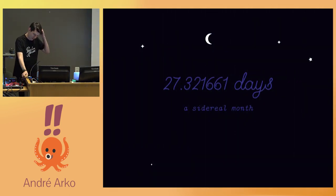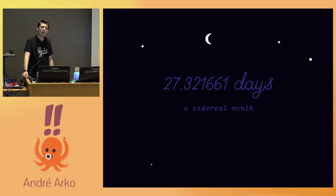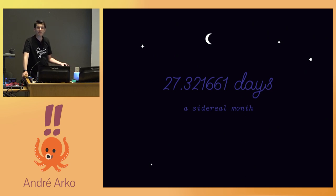Then inspiration struck as I read the Wikipedia page about moon phases yet again. Wikipedia said a sidereal month is exactly 27.321661 days long. And I said, oh, maybe I can just look up exactly when the new moon was and then repeatedly add 27.321661 days and know when the phases of the moon are. That sounds totally reasonable, right? I mean, it's a float. It won't be perfect, but it can't be that bad, can it?